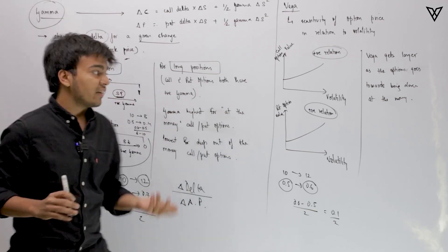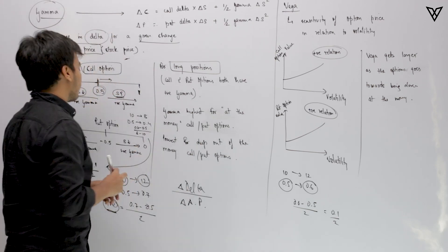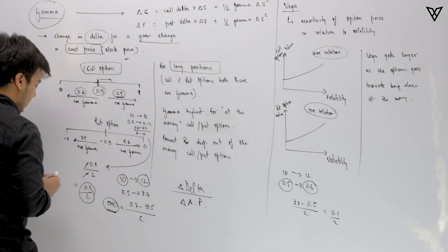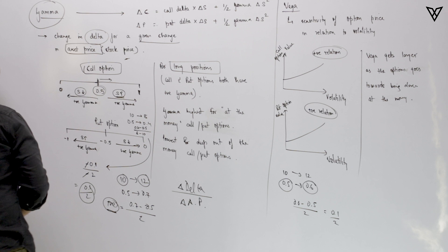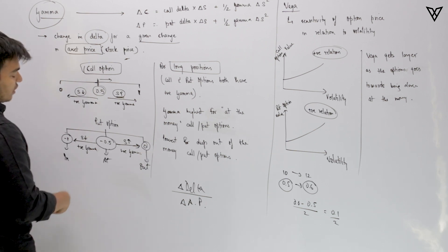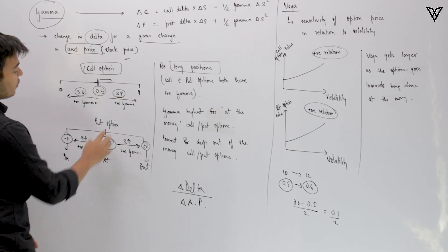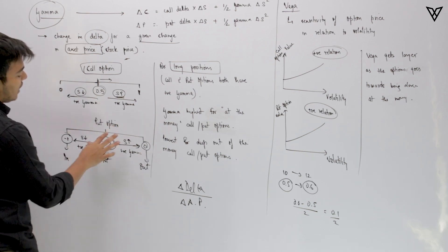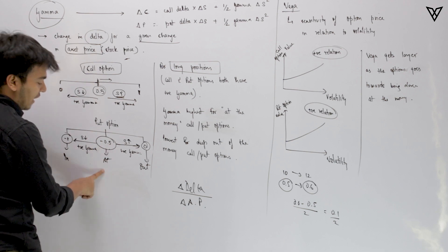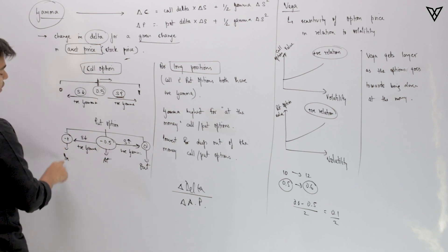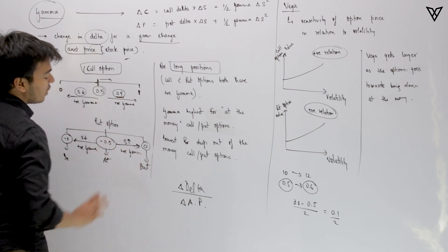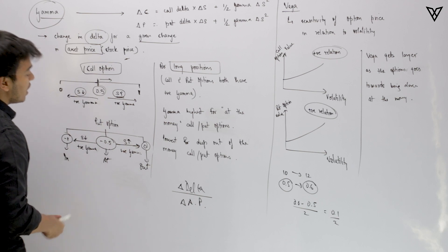Now let's understand how gamma works for put options. For put options, we have a delta of minus 0.5 for at the money, minus 1 for in the money, and 0 for out of the money.